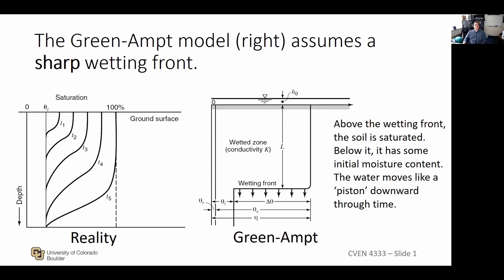If you take a look at the left diagram, you'll remember what we were talking about in the infiltration unit — water is moving downwards from the surface into the unsaturated zone. In reality this is a fairly complicated process. You've got different curves T1 through T5 for different points in time; at first the ground is not fully saturated, and then eventually through time, if you look at a cross-section in depth, you would see what's happening through time.